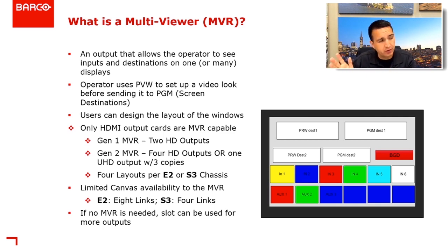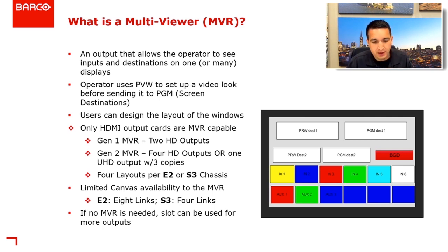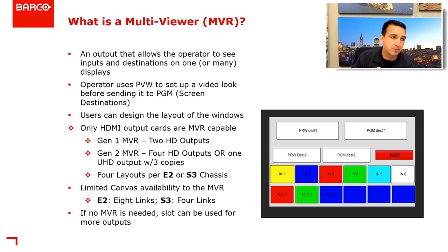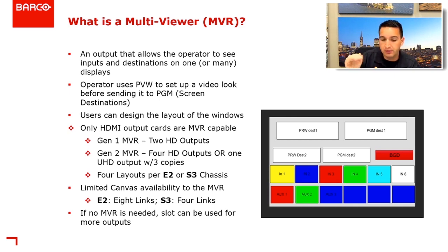There's a third output type we don't really consider an output type, but some people do — the multi-viewer. A multi-viewer is an output that allows the operator to see all of their inputs and destinations on one or many displays. With a Gen 1 HDMI card you have two discrete HD multi-viewers; with a Gen 2 multi-viewer card you have up to four discrete HD multi-viewers, or one 4K multi-viewer with a split — copies of the first 4K output. The multi-view is user configurable.